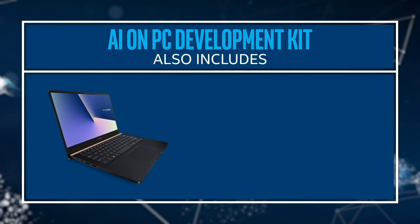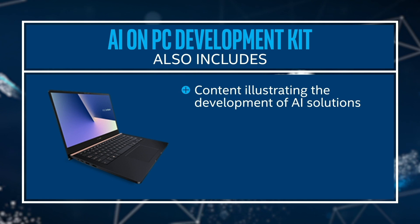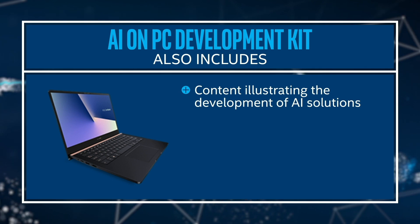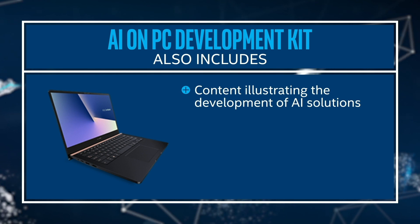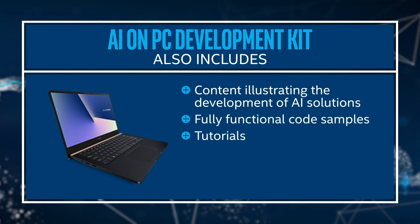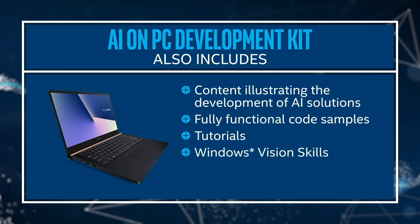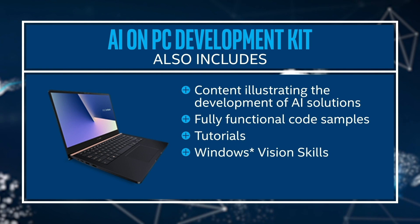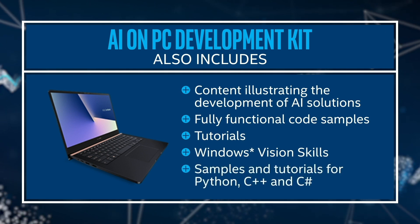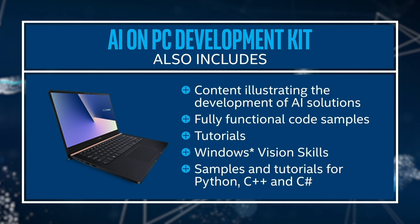Also included in the Dev Kit is content illustrating the development of AI solutions using the provided software. For example, OpenVINO-based applications and Windows ML-based applications. For each environment, there are fully functional code samples, tutorials explaining how to create applications, and Windows vision skills which you can use to add AI capabilities to your applications. Samples and tutorials are provided for Python, C++, and C Sharp, and include native and universal Windows platform applications.